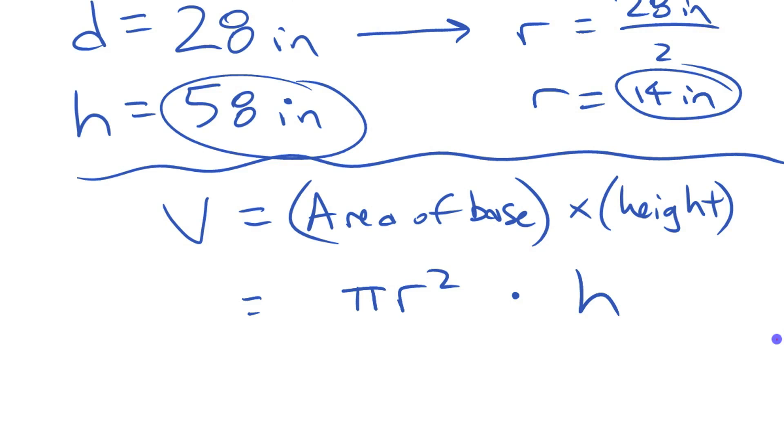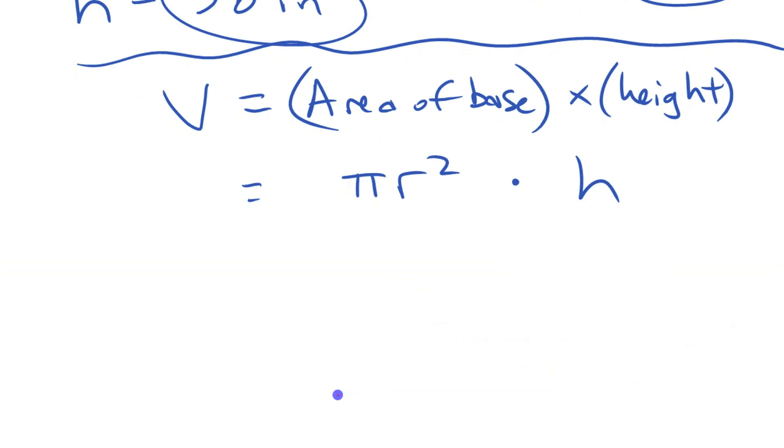So those are the numbers we're going to substitute into our formula that we've set up, our equation that we've set up down below here. Make even more space. So we're going to replace this r with 14 inches. I'm going to include the units when I do these calculations, you'll see why in a second. We're going to replace the h with 58 inches, and then the rest of it we're going to just keep the same. π times 14 inches squared times 58 inches, that's our volume.